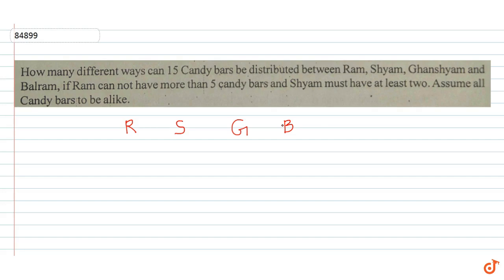Assume all the candy bars to be alike. So we have 15 candy bars total. We're given that Shyam must have at least 2, so it means we must give Shyam 2 chocolates first. So we give 2, leaving us with 13 remaining.